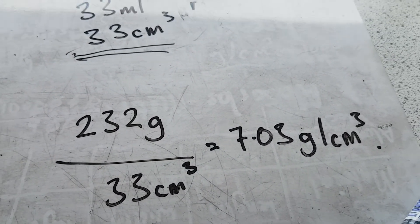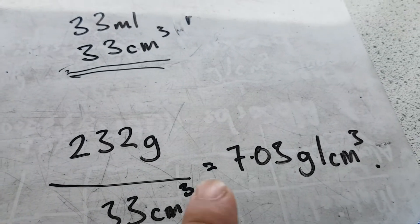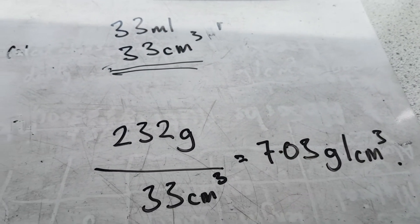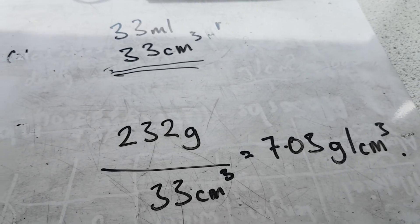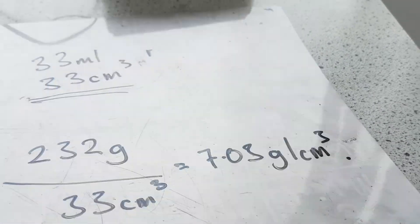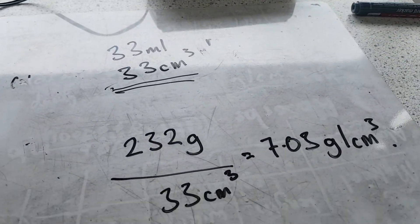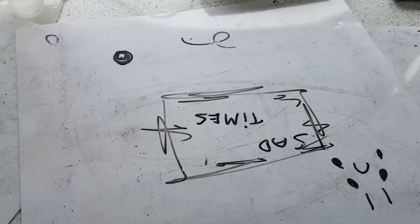And that comes to 7.03 grams per centimeter cubed. Now to get that into kilograms per meter cubed, we need to divide this answer by 1,000. And that will give us our answer in kilograms per meter cubed. And guys, again, once again, for this irregular shaped object, we are using exactly the same table.